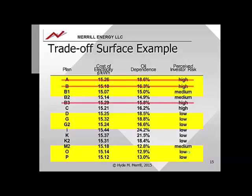Completing this example is left as a homework exercise. The answer is that a small handful of plans are on the trade-off surface, and two of those plans are at the knee of the multidimensional trade-off surface.